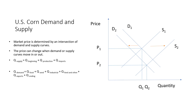When trying to estimate how the prices of corn will behave, one needs to analyze the factors that affect its demand and supply. From Economics 101, we remember that the market price is determined by the intersection of demand and supply curves. The price can change when the demand or supply curve moves in or out.